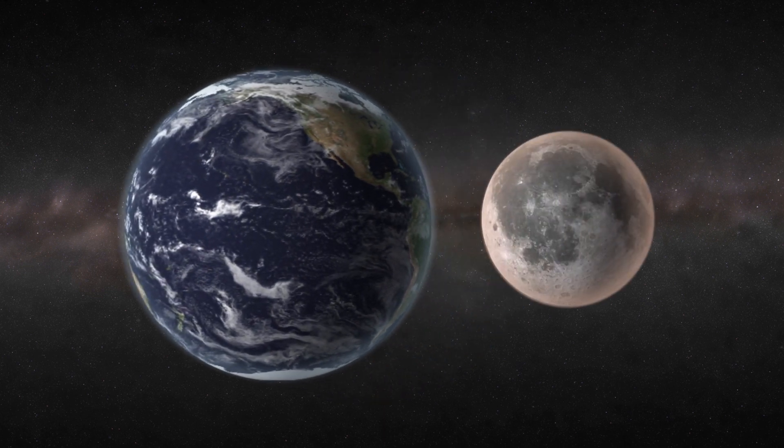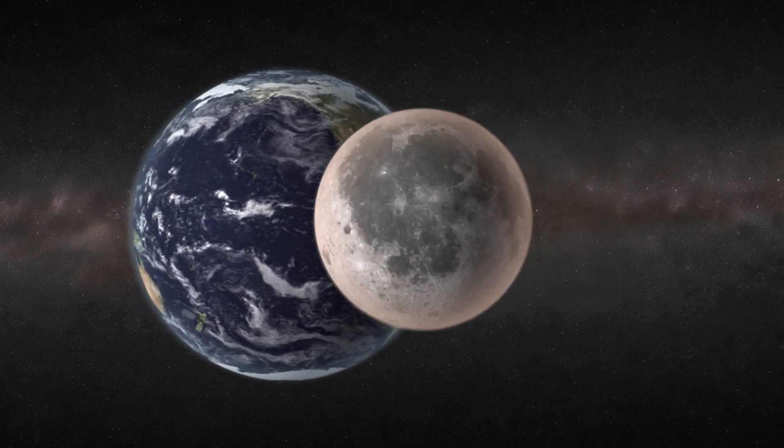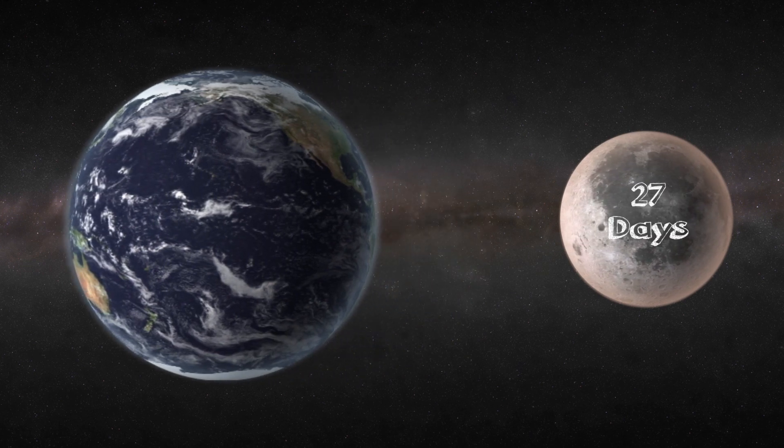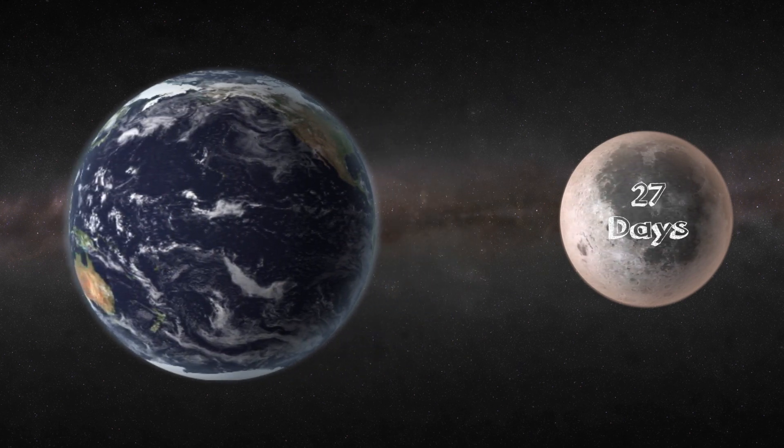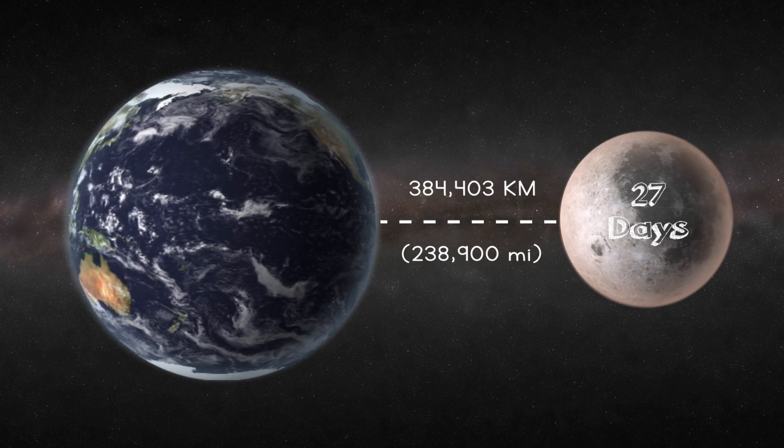Our moon is the Earth's only natural satellite, meaning it's the only naturally occurring body that orbits the Earth. It takes a little over 27 days for the moon to make one full orbit around the Earth. And on average, the moon is 384,400 kilometers away from Earth.